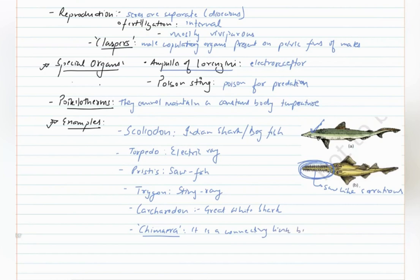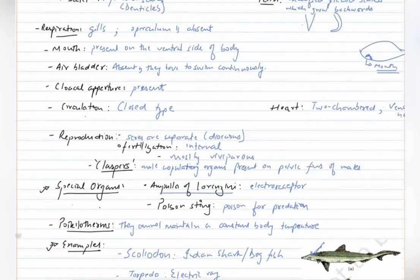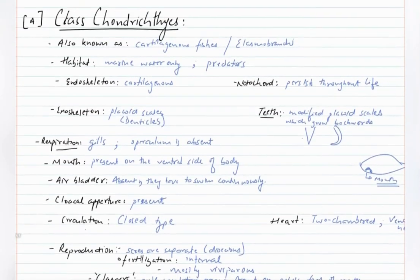It is a connecting link between cartilaginous and bony fishes. So with this we finish off with the topic Class Chondrichthyes. See you in the next video.